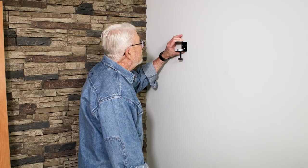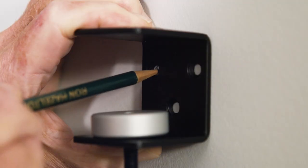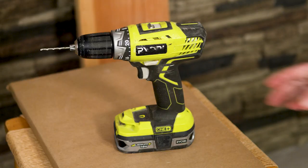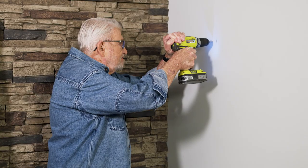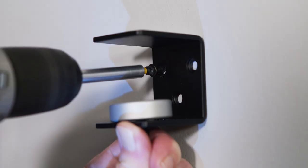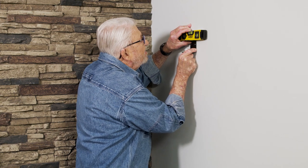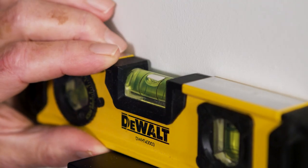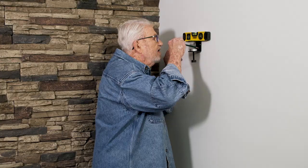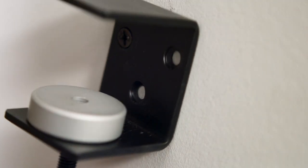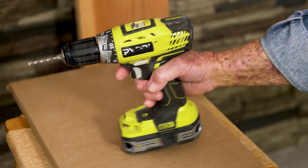I'm centering the bracket over the stud location and marking the mounting holes. Next, I bore a pilot hole and drive in the first mounting screw. Then, using a short magnetic level, I make sure the bracket is perfectly horizontal, mark a second mounting screw location, and bore the pilot hole.